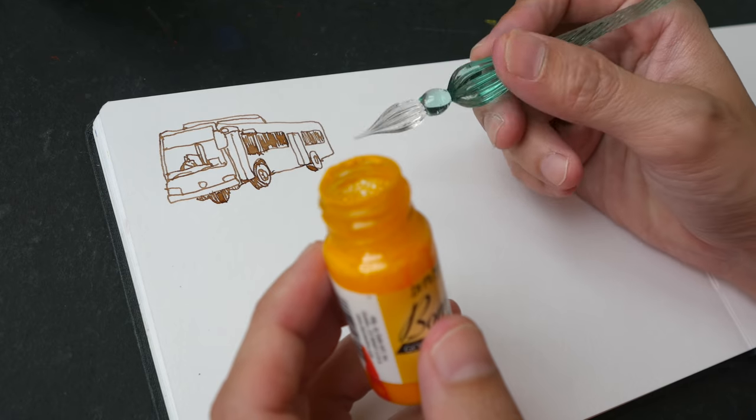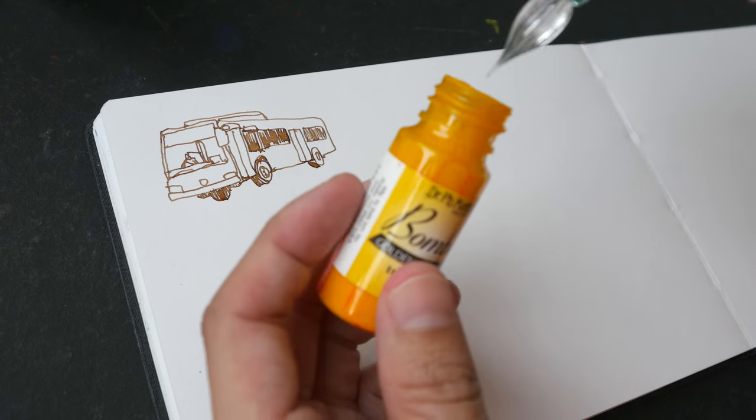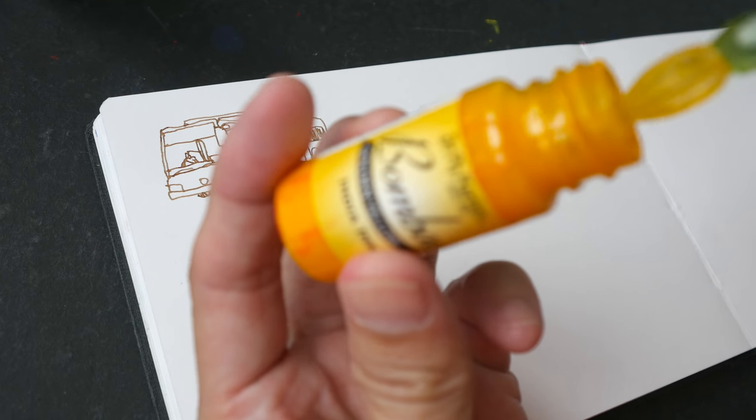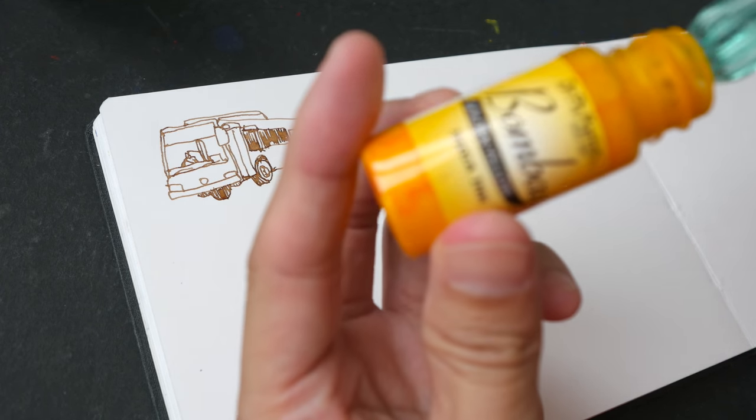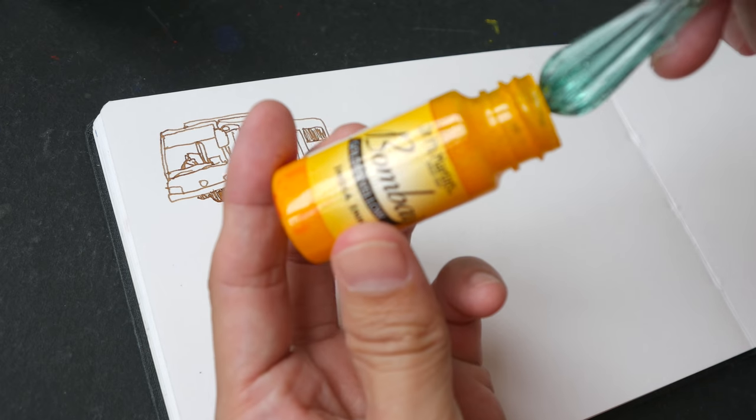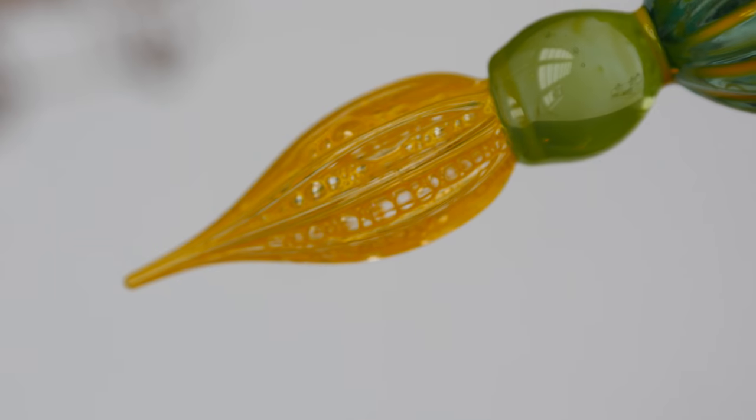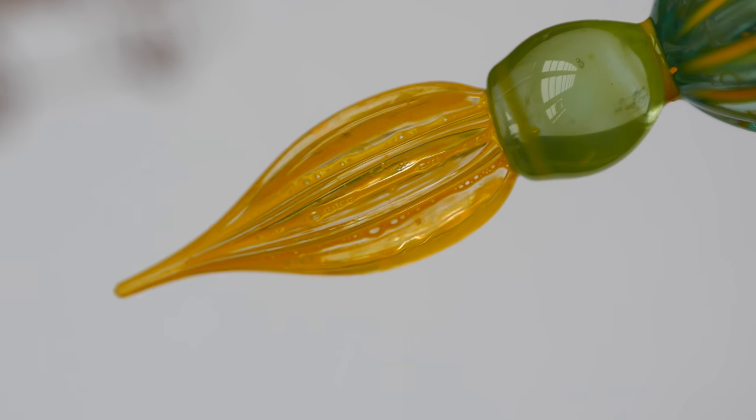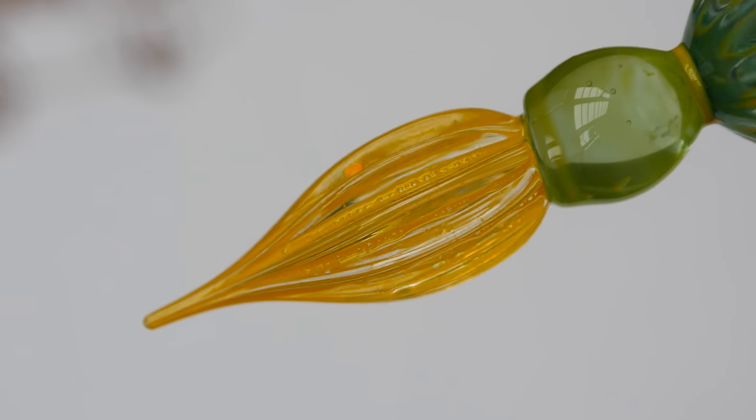I've just washed the pen and wiped it dry. Now I'm going to use India ink. This is Dr. PH Martin's Bombay India ink. This color is golden yellow. I think I shook the bottle a bit too much. So there are a lot of bubbles. But they are almost gone now. Great.